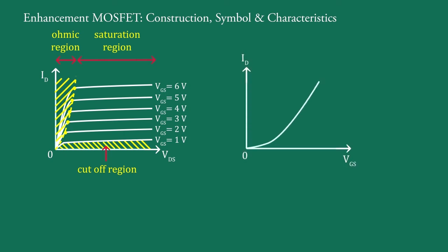If we plot transfer characteristics, that is drain current ID versus gate to source voltage VGS at a constant drain to source voltage VDS, it is like this. The drain current ID is initially zero. The drain current ID flows only when VGS exceeds gate to source threshold voltage VT. Afterwards, with increase in VGS, ID increases slowly at first and then rapidly.